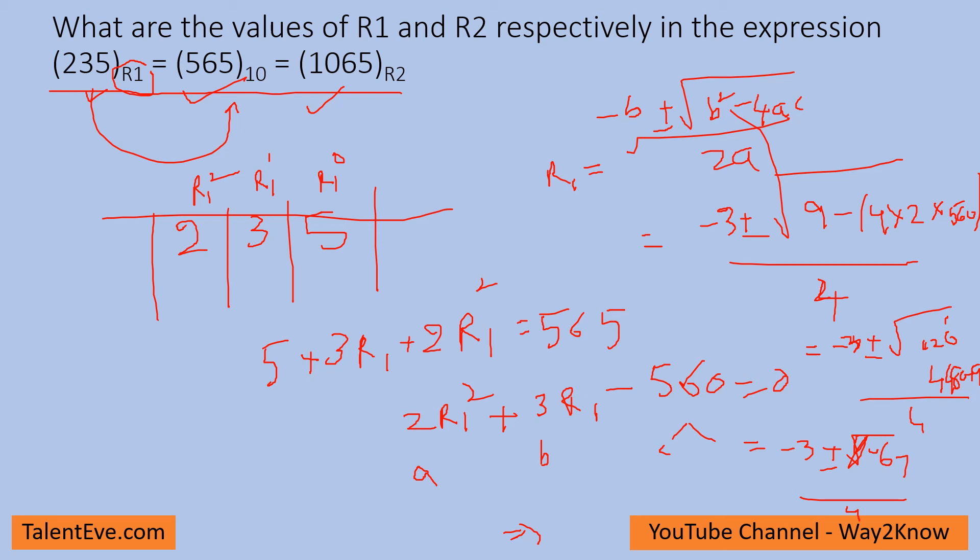This gives minus 3 plus 67 over 4, which equals 64 over 4, which is 16. The minus 3 minus 67 case gives minus 70, which cannot be a negative number, so the answer is 16. Similarly, you can solve for 1065 to find R2.